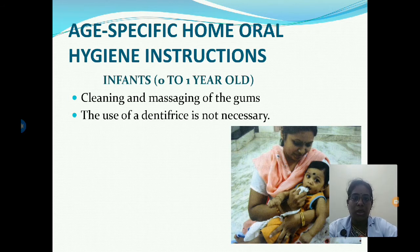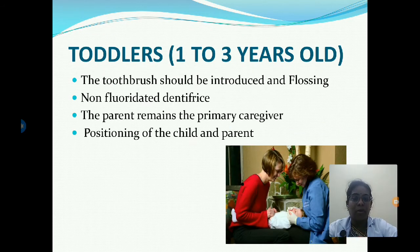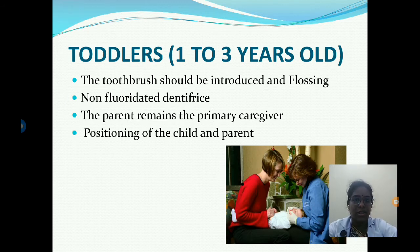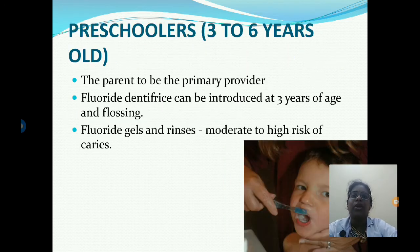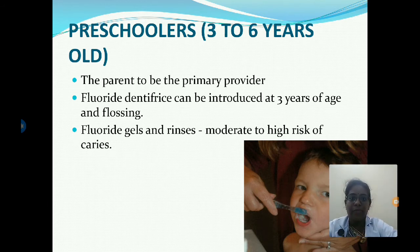Age-specific oral hygiene instructions for infants zero to one year include cleaning and massaging of the gums; use of dentifrice is not recommended at this age. For toddlers one to three years, a toothbrush should be introduced along with flossing, and non-fluoridated dentifrice is recommended. The parent remains the primary caregiver for proper oral hygiene. For preschoolers three to six years, fluoridated dentifrice can be introduced at three years of age, and fluoride gels and rinses can be given for moderate to high caries risk.